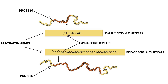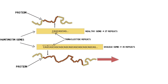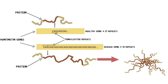Mutated Huntington proteins have a tendency to group together, forming clusters within neurons that are not easily removed by brain enzymes. It has been hypothesized these clusters may play a role in the neurodegeneration seen in Huntington's disease, for their accumulation in the brain is associated with increased neurodegeneration.